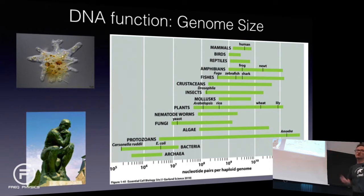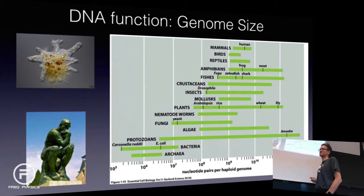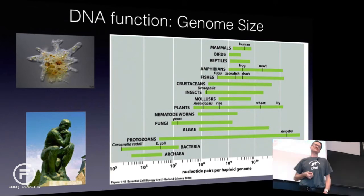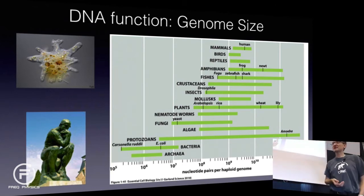How large is the human genome? That's a number you should know: three billion base pairs. Again, plus or minus 10%.